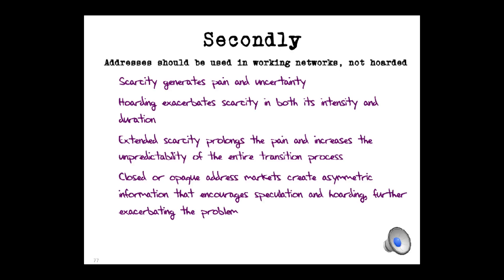There's been a lot of talk about address markets and scarcity and the issues of hoarding and pricing. It's true. Addresses are there to achieve networking. Scarcity generates pain and uncertainty and hoarding just exacerbates that. So, address markets should really be avoided. But on the other hand, I'm not sure how we avoid them. So, the best I can say is, build the market openly. Closed and opaque address markets create information models that are asymmetric. It encourages speculation and hoarding and exacerbates the problem. So, if we want to get through this transition, try and make sure that markets operate as openly as possible and as efficiently as possible.